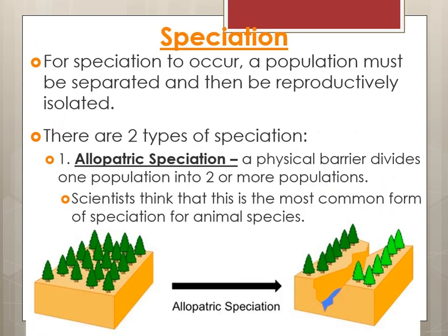For speciation to occur, a population has to be separated and reproductively isolated. There are two ways this can happen. The first is allopatric speciation — a physical barrier that divides a population into two or more groups. Scientists think this is the most common form of speciation for animal species: a legitimate barrier separated a population and kept them separated long enough that they can no longer interbreed with each other.